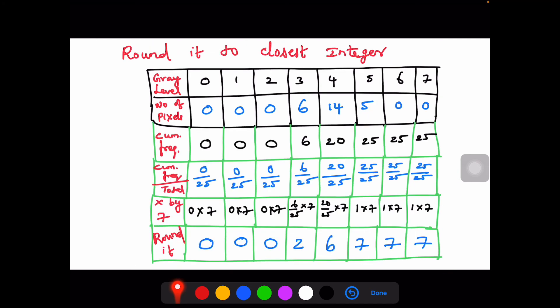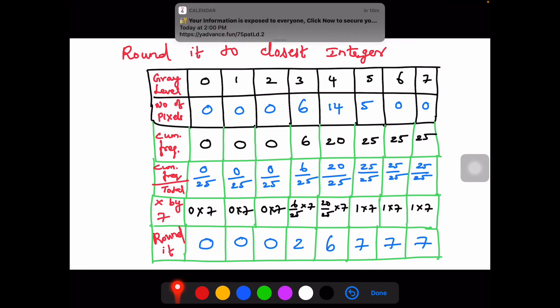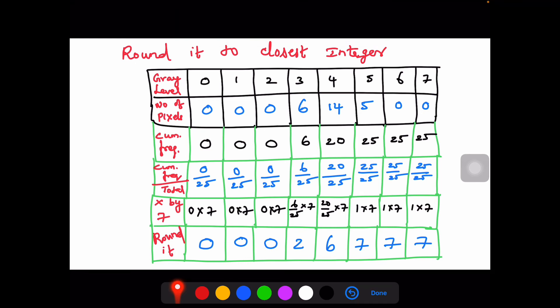Coming to the next step, round it off to the closest integer. Here, 0 into 7 is 0, you get something like 1.6, round it off to 2, and here round it off to 6, 7 and 7.